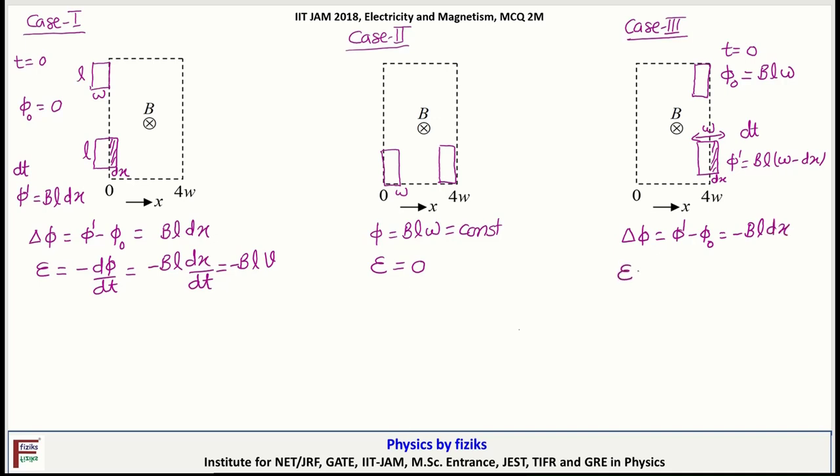So induced EMF is minus d phi by dt and this will be minus of minus B L dx by dt. So induced EMF will be plus B L v.